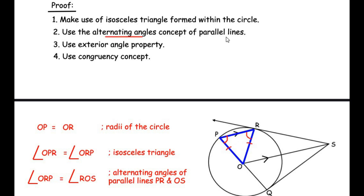Next, we use the alternate angles concept of parallel lines. Since PR is parallel to OS, the lines drawn represent alternate angles. Therefore, angle ORP equals angle ROS, because of the alternating angles property of parallel lines PR and OS.